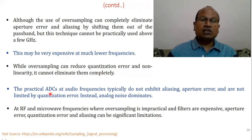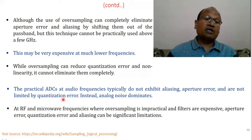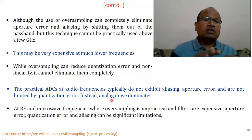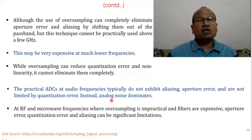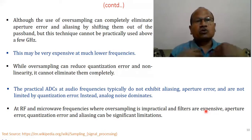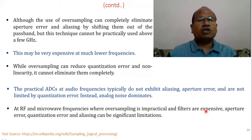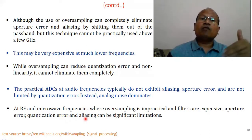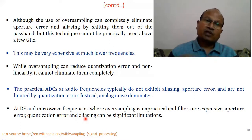Practical ADCs used at audio frequencies do not exhibit aliasing or aperture error and are not limited by quantization error — instead, analog noise dominates. In practical ADCs, noise remains because of electronic circuits and other components. At RF and microwave frequencies where oversampling is not possible, filters are expensive to design. Therefore, aperture error, quantization error, and aliasing can be significant limitations when using the sampling process at microwave and RF frequencies.